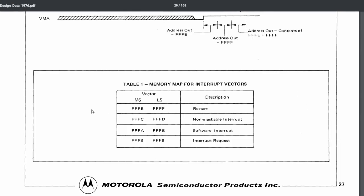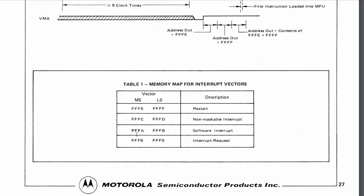There are three different interrupt routines. The non-maskable interrupt routine is stored at addresses FFFC and FFFD. Non-maskable means it must be serviced. A maskable interrupt has a mask bit in the flags register called I that you can set or clear — that tells you whether you have to service an incoming maskable interrupt. The maskable interrupt vector is stored at FFF8 and FFF9. Then there's a software interrupt, which is what happens when the program itself wants to perform an interrupt — that is stored at FFFA and FFFB.